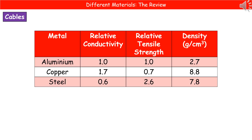One of the more common exam questions they like to ask about these materials is to give you a table with some key properties of a few materials and ask you to select which material you should use for a given job and justify your answer. For example, if we were to consider an overhead power cable, they could give us a table like this.